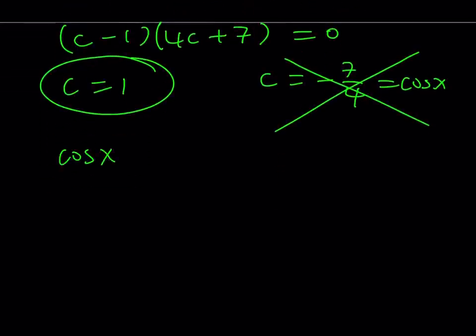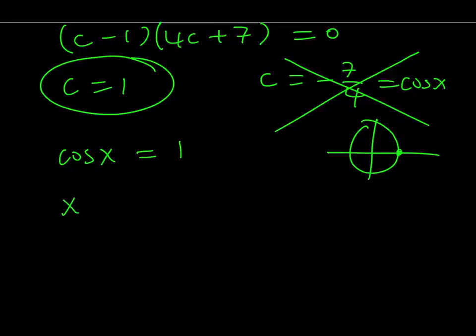So cosine x equals 1. If you think about the unit circle, there's only one location where cosine equals 1, and that is at 0 and multiples of 2π. So from here, we get x equals 2πn, where n is an integer.